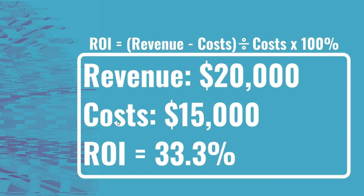So in this case, $15,000 is my investment and my total return was $20,000, making my ROI 33%. Now if my investment is $15,000 and my revenue ends up being $30,000, then my ROI would be 100% — my total investment was $15,000 and my return was $15,000 in profit. In the case where my investment is $15,000 and my revenue is also $15,000, my ROI would be 0%.